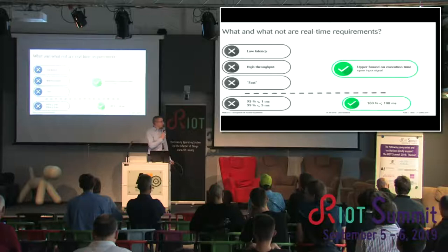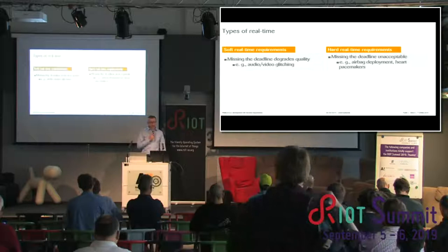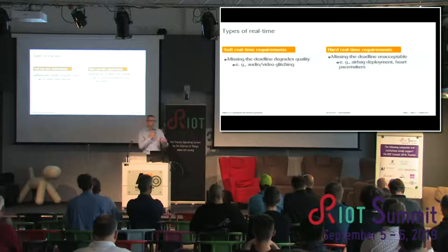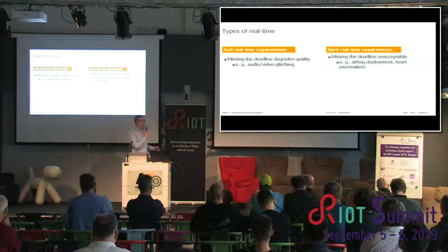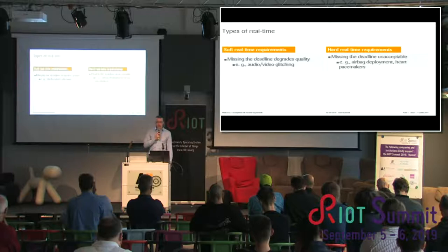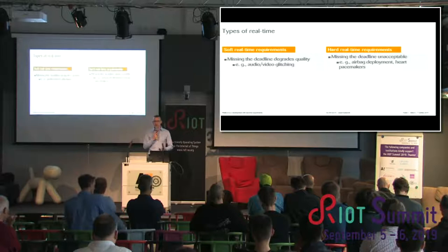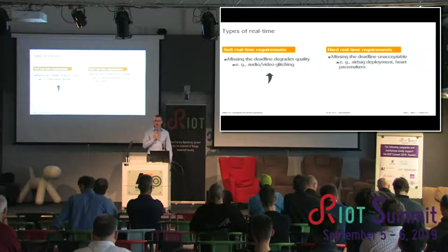There are generally two types of real-time systems: soft real-time and hard real-time. Soft real-time means that missing a deadline degrades quality — everybody has experienced an audio or video glitch because a deadline was missed. In hard real-time systems, missing the deadline is unacceptable because it usually means humans will be harmed — for example, airbag deployment or a pacemaker. Hard real-time requirements also typically include safety requirements. For this talk, we'll focus on soft real-time requirements, where we can use more third-party libraries and won't harm humans.